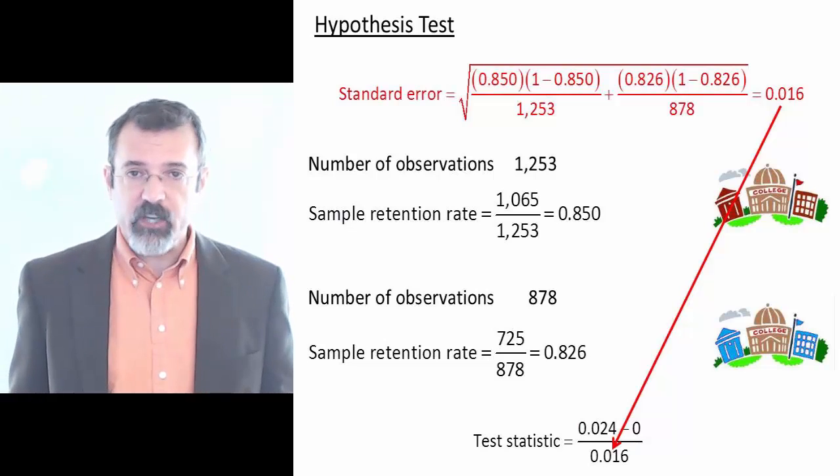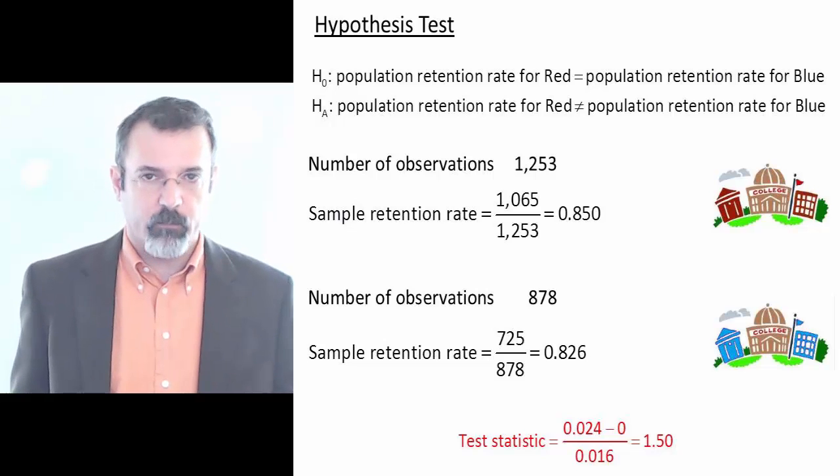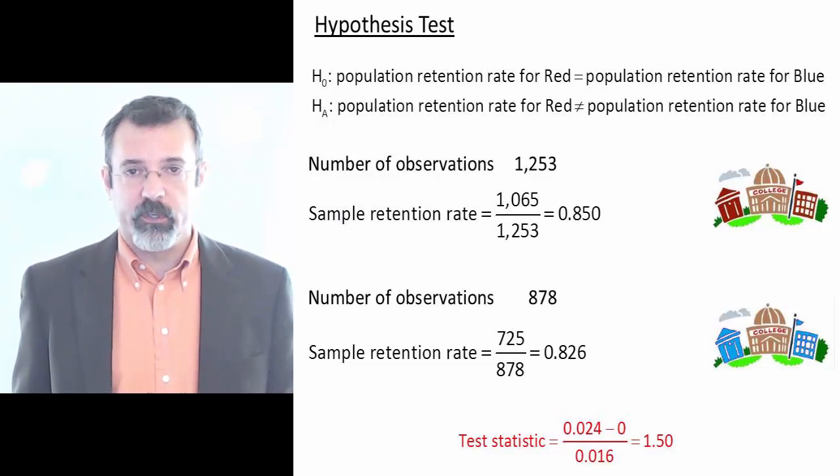So using this information, we can now construct our test statistic: 0.024 minus 0 divided by 0.016, or 1.5.